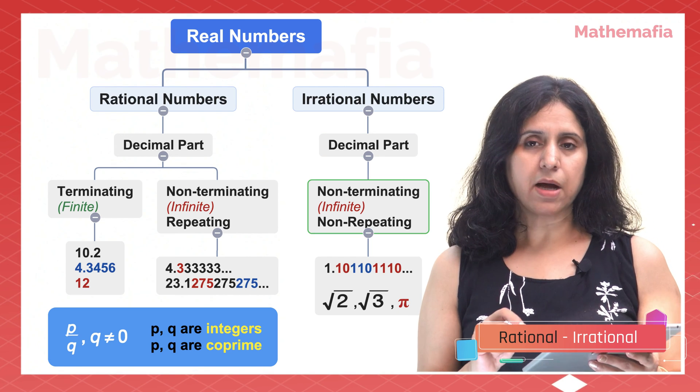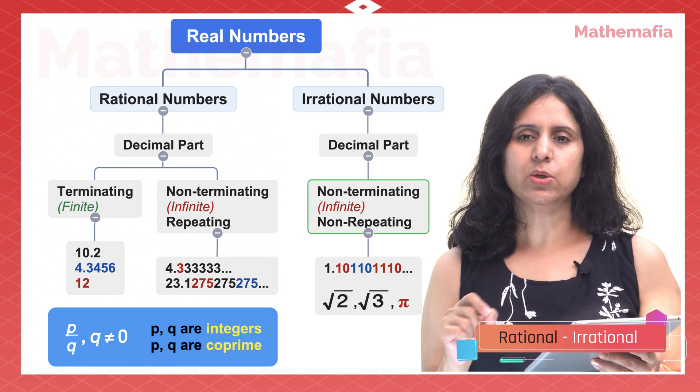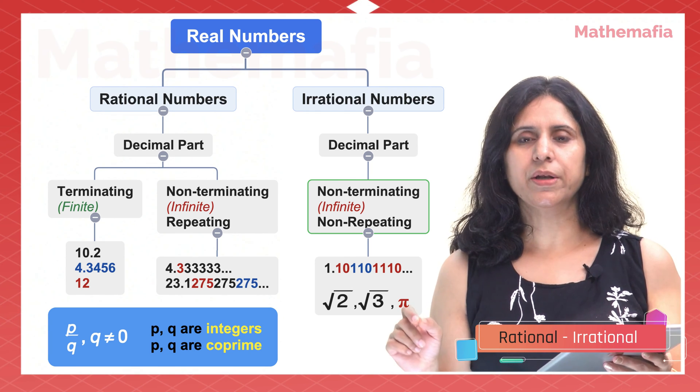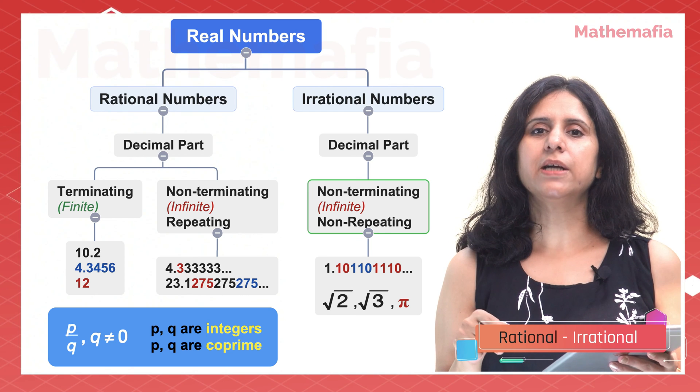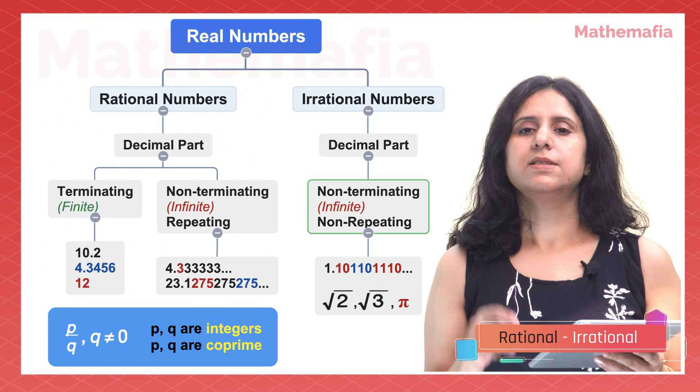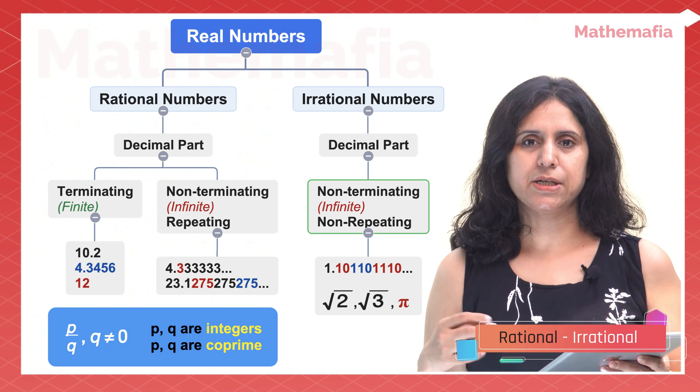For example, in the number 1.101101110 and so on, the digits in the decimal part are infinite and non-repeating. Such numbers are called irrational numbers.